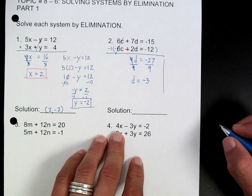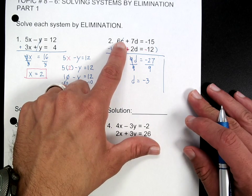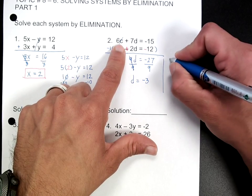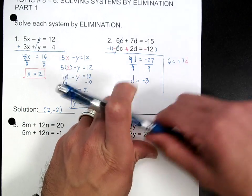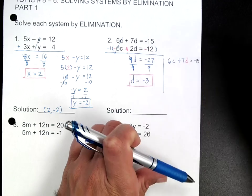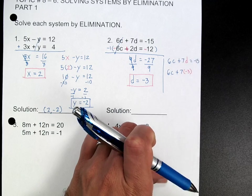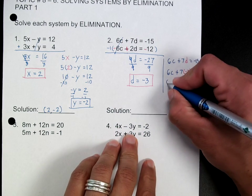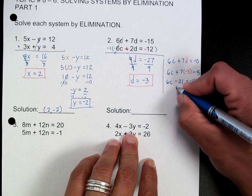Now I'm going to go back and pick an equation to plug it back in. It doesn't matter which one you pick. I'm going to pick the top one. So we have 6c plus 7d equals negative 15. Remember that this is the answer I came up with. We have 6c plus 7 times negative 3 equals negative 15. I'm going to add all that together, so we have 6c minus 21 equals negative 15. I'm going to add 21 to each side.